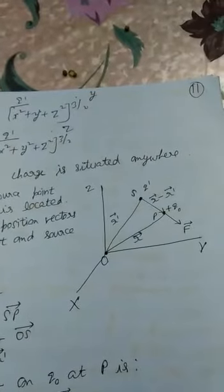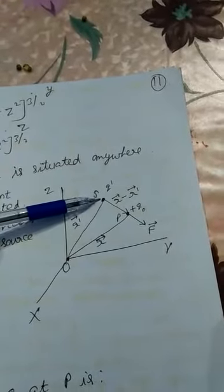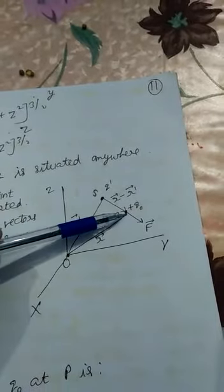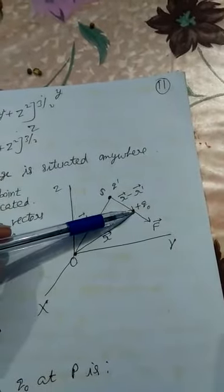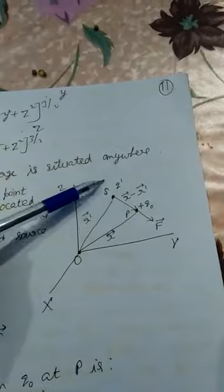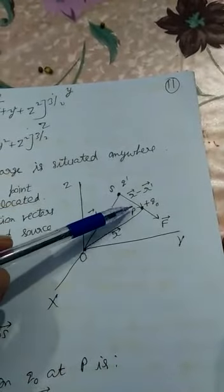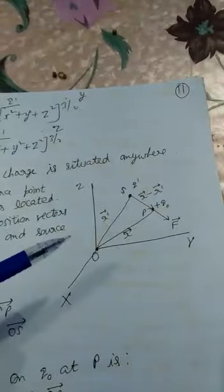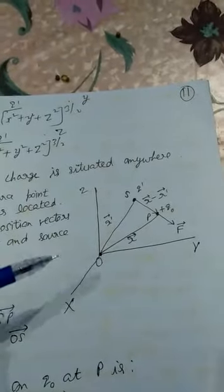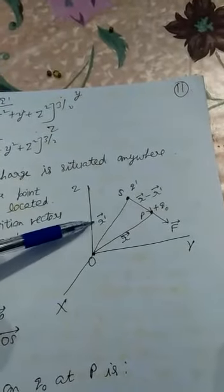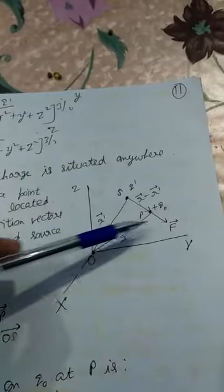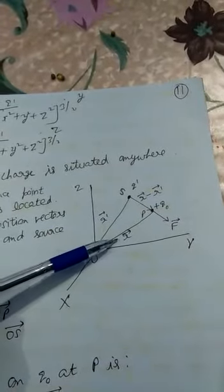We have source charge S in the space and test charge Q0 at point P. Again they have positive nature, so they always have a force of repulsion between them. Position vector of S is R' vector and for Q0 is simply R vector.